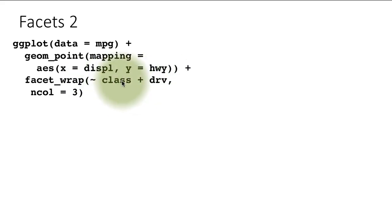This time, displacement versus highway exactly the same thing as before, except in facet I've said facet_wrap and I've put two variables here. Instead of creating one facet for each class alone, create a facet for every combination of class and drive. Drive, if you remember, is front wheel drive, rear wheel drive, or four wheel drive. There are three possible combinations of that and class has seven possible combinations.